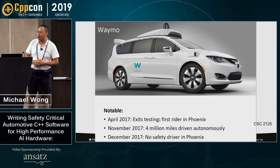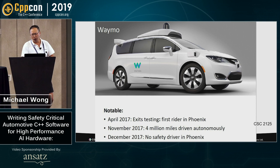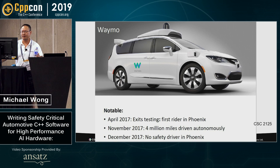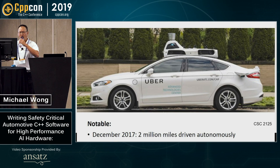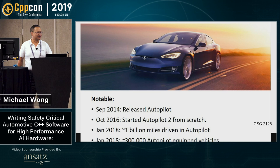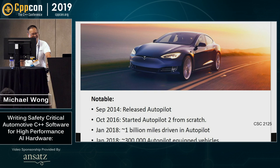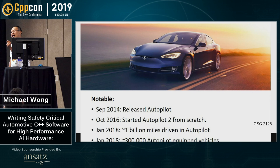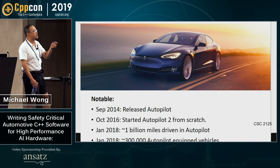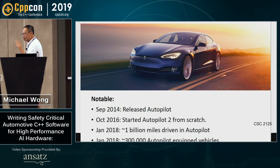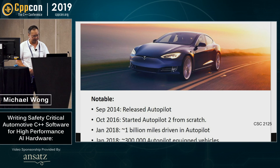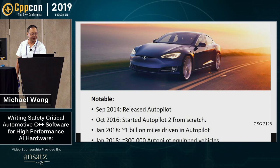Let's do a recap of where everybody is. Waymo, the Google spinoff, has been doing four million miles driven autonomously. There's no safety driver in Phoenix right now — they've exited testing. Uber, since 2017, has driven two million miles. And Tesla — they have done an amazing job. They passed what's called the billion-mile test, which is the litmus test in autonomous driving: you need to have your cars driven a billion miles to verify safety. They have 300,000 autopilot-equipped vehicles.